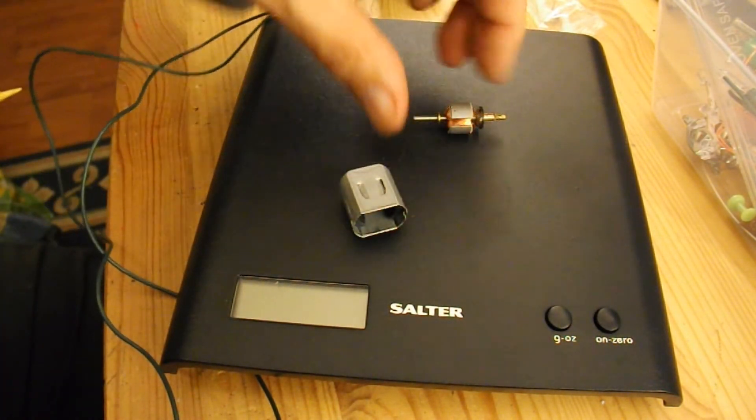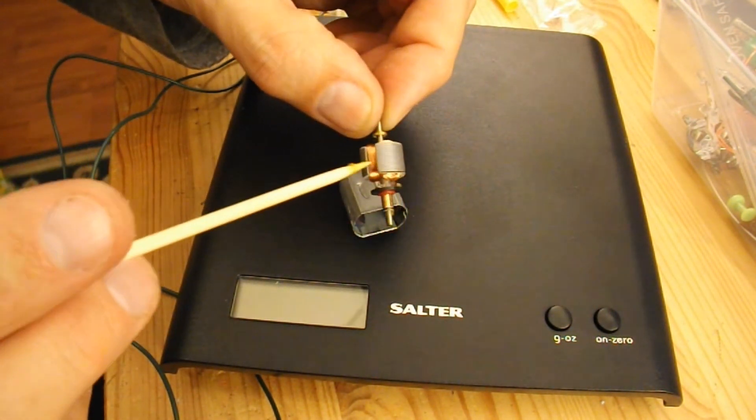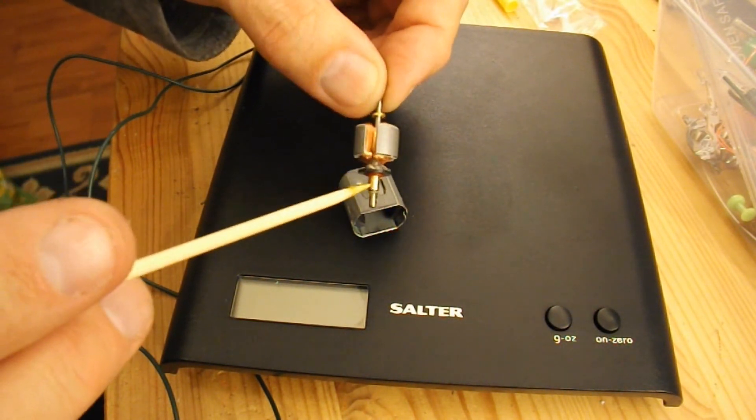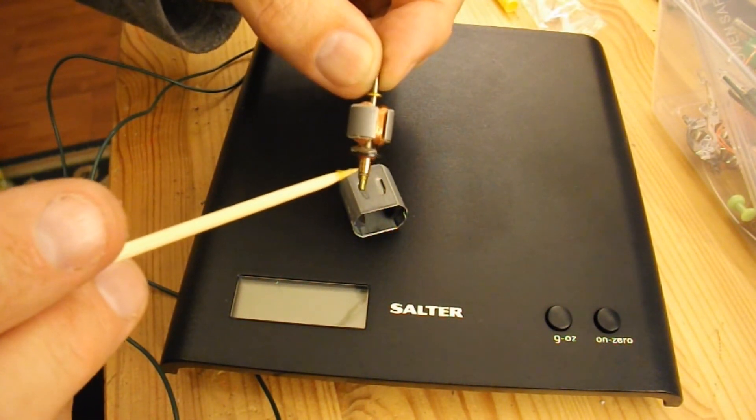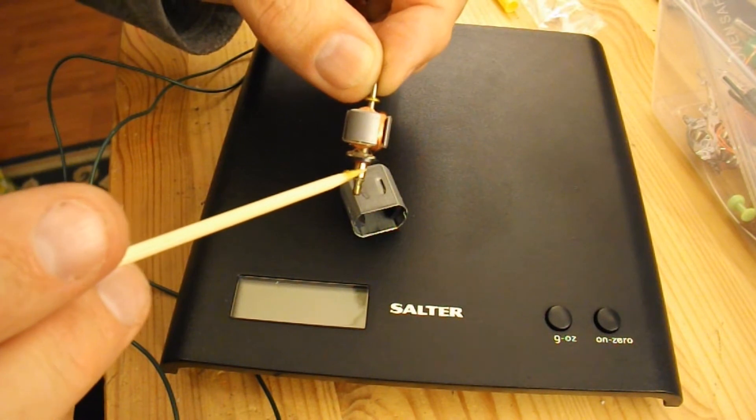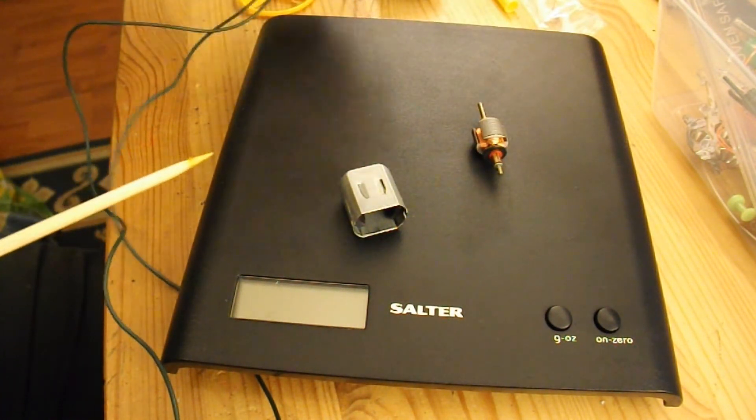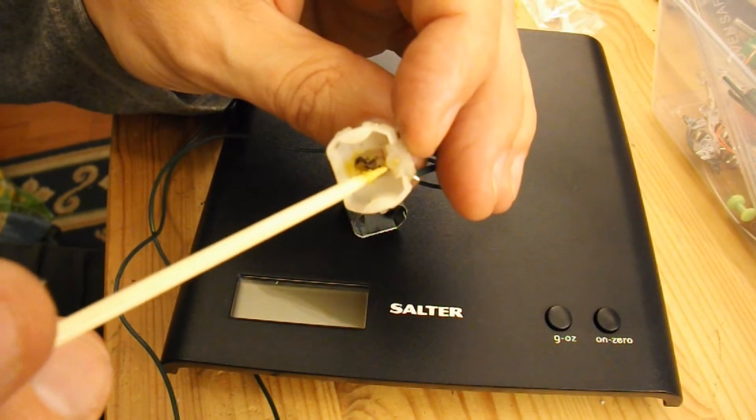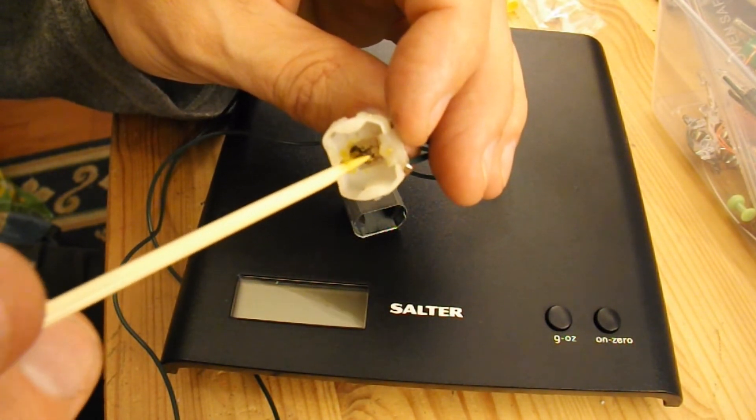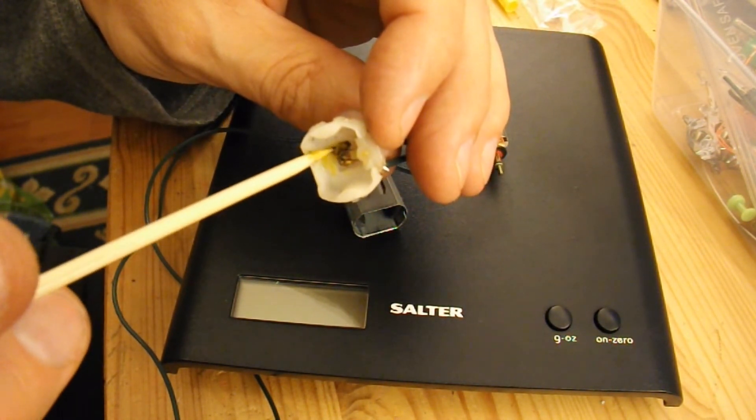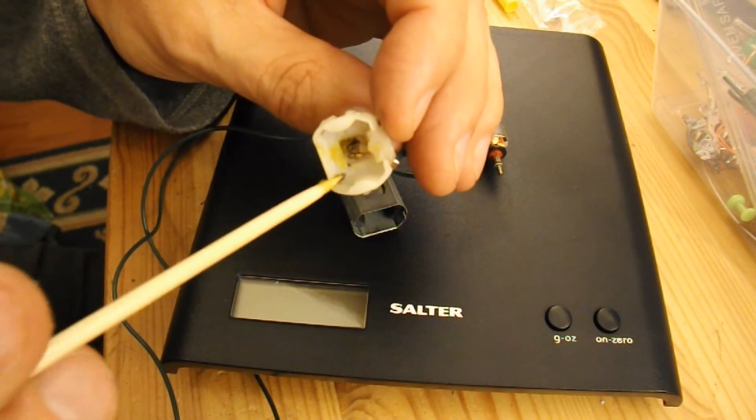Then that's the armature with the coils of wire on it and the commutator that connects the power to the coils, and then inside here that's the two brushes that make contact with the commutator. Got a bit of grease on there as well.